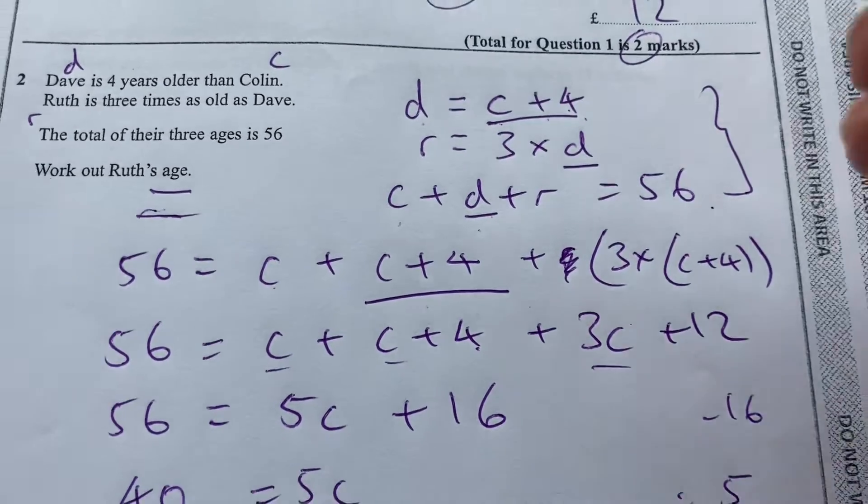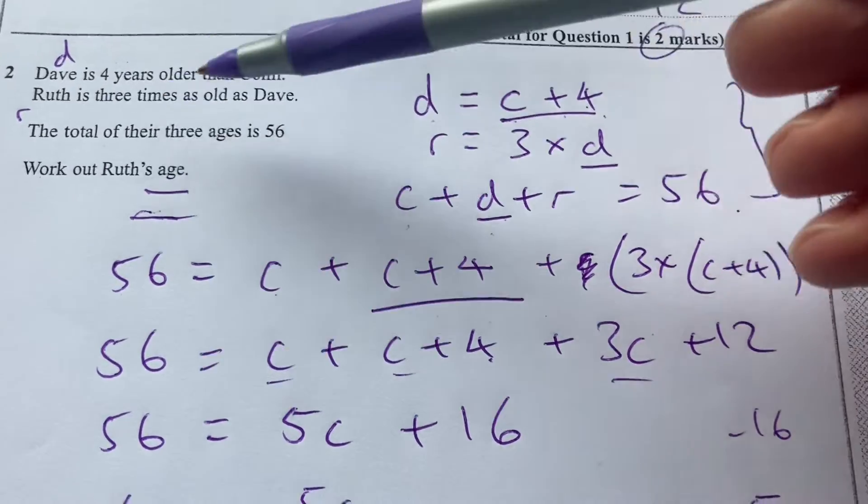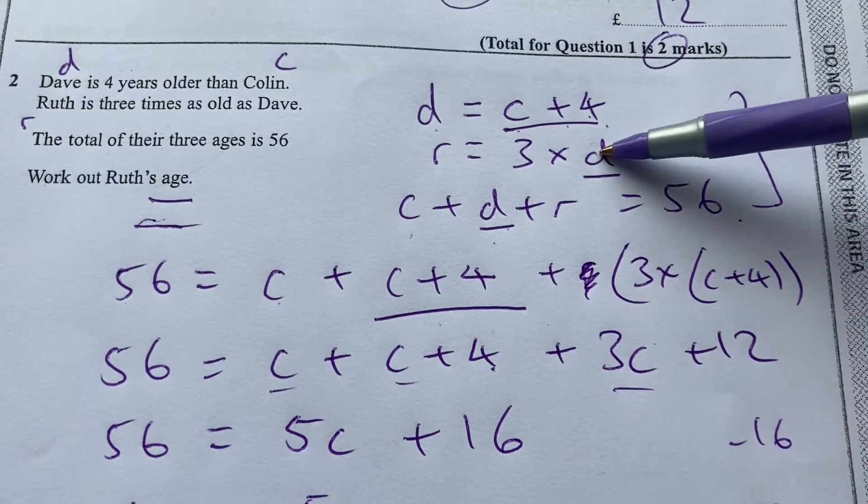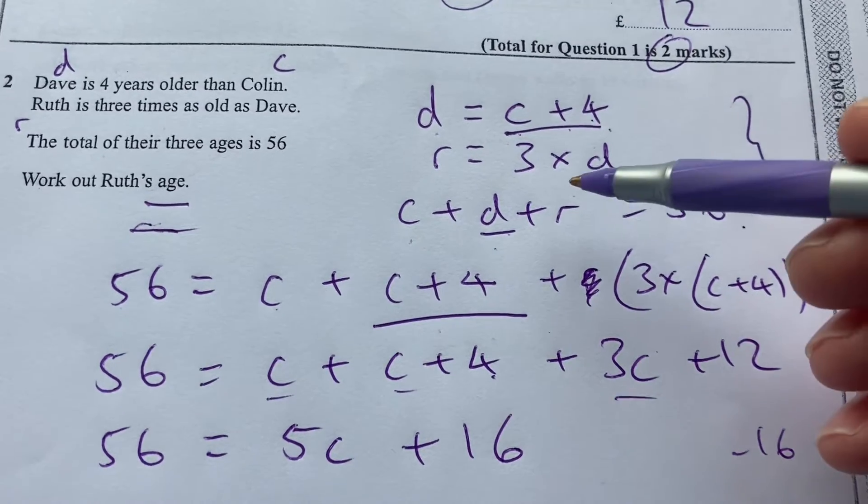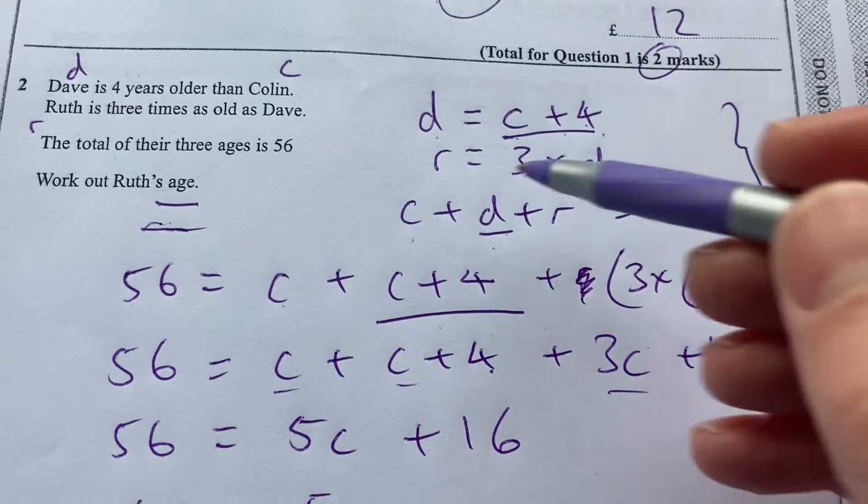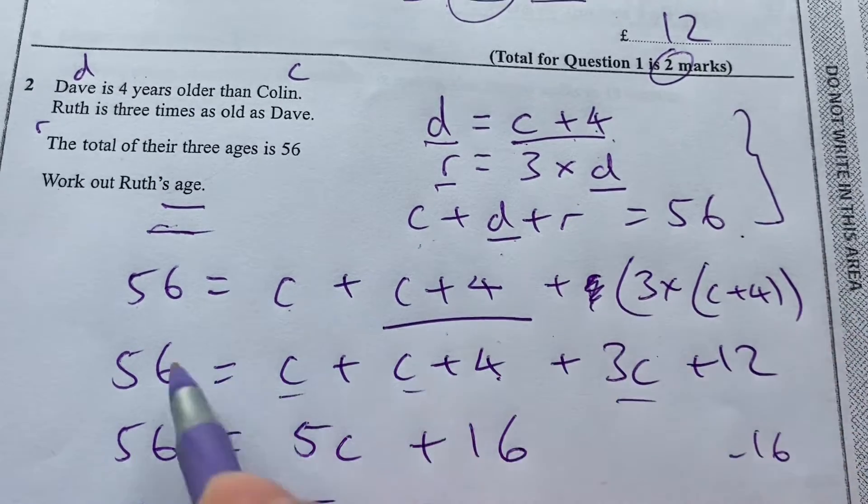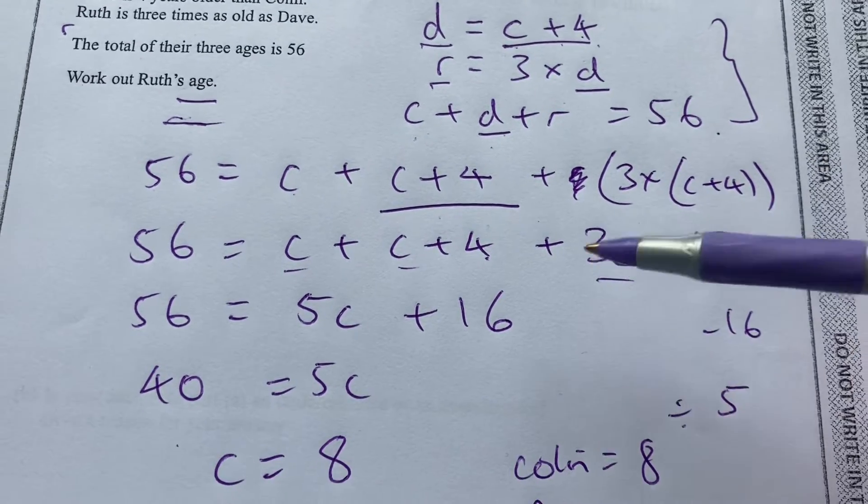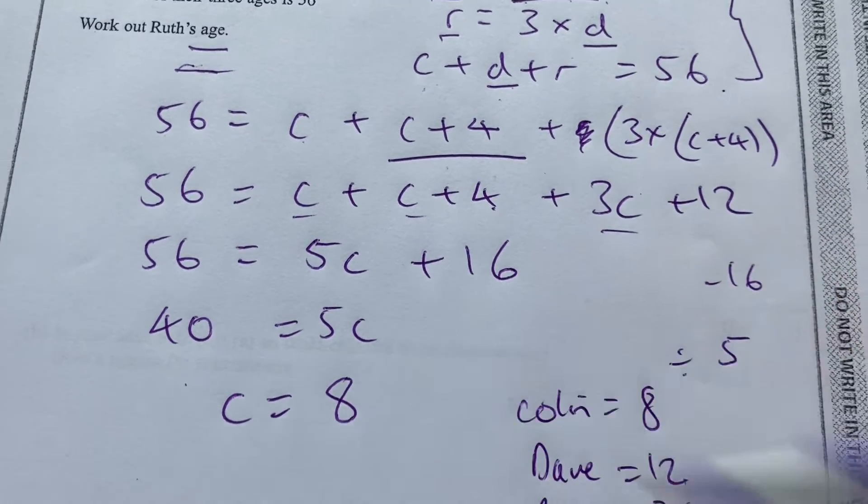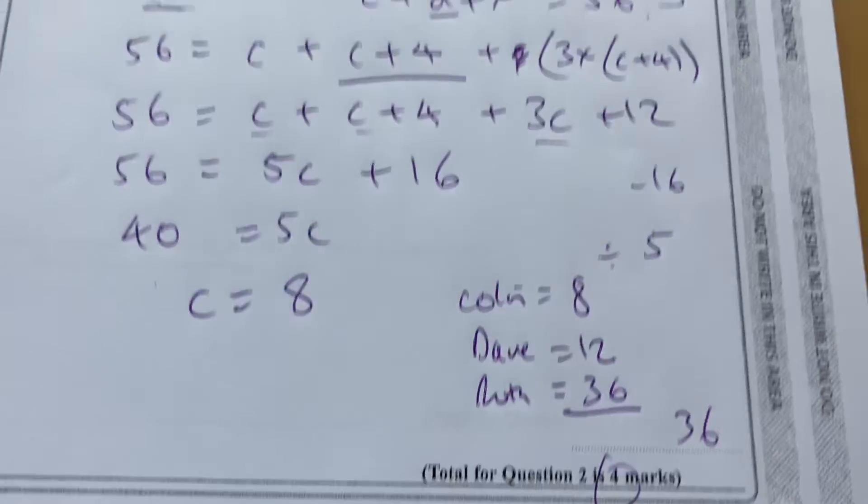Let's go through it once more. I've turned all this literacy, all these words, information into algebra using equations and variables. I've then replaced the D and the R in terms of C. So I have one equation and one unknown. And then I simplify, collecting like terms, and solve for C. And there we go. That's four marks there for question two.